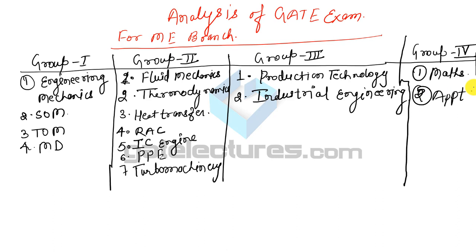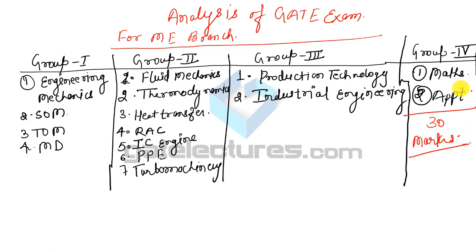Now let's move to the analysis. Group 4 contains 30 marks total — 15 marks of Aptitude and 15 marks of Mathematics. Both subjects contain 15 marks each.